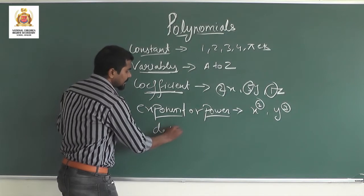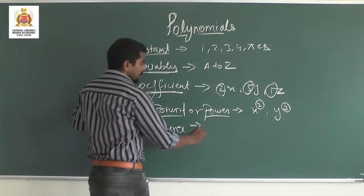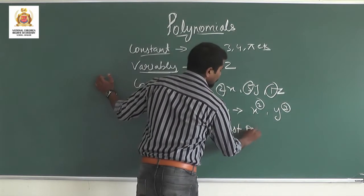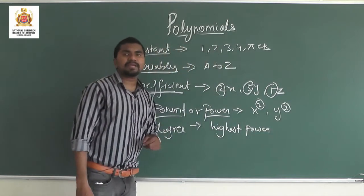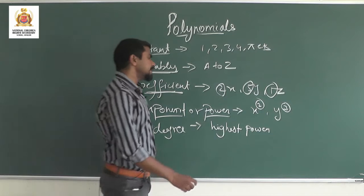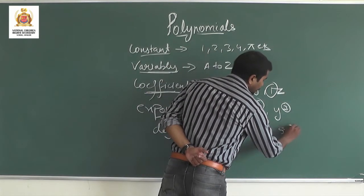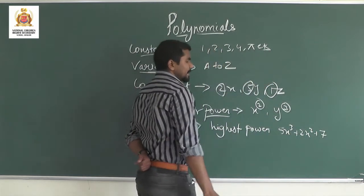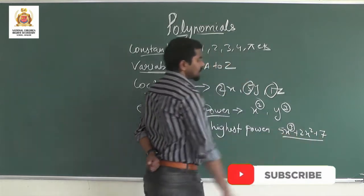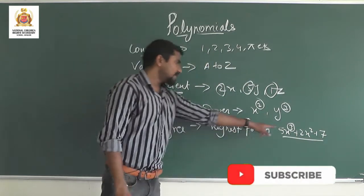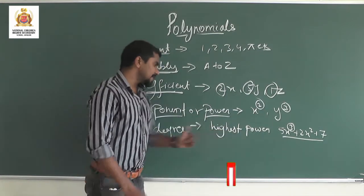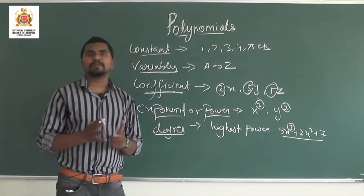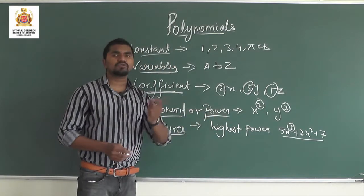Power leads us to the concept of 'degree'. Degree means the highest power in any algebraic expression. For example, in 5x³ + 2x² + 7, the highest power is 3, so the degree of this algebraic expression is 3.